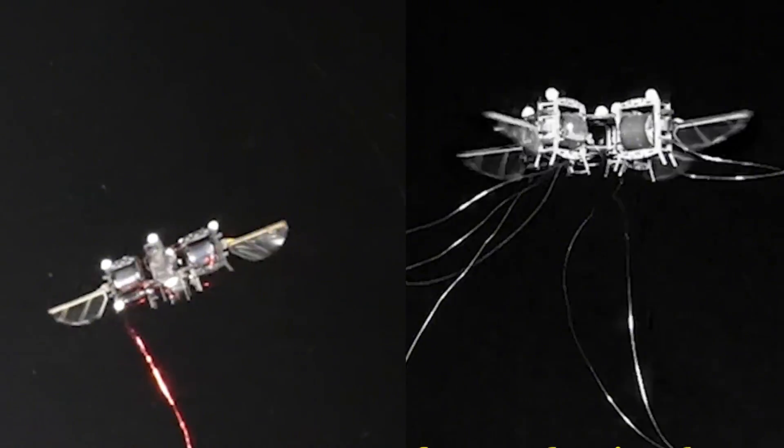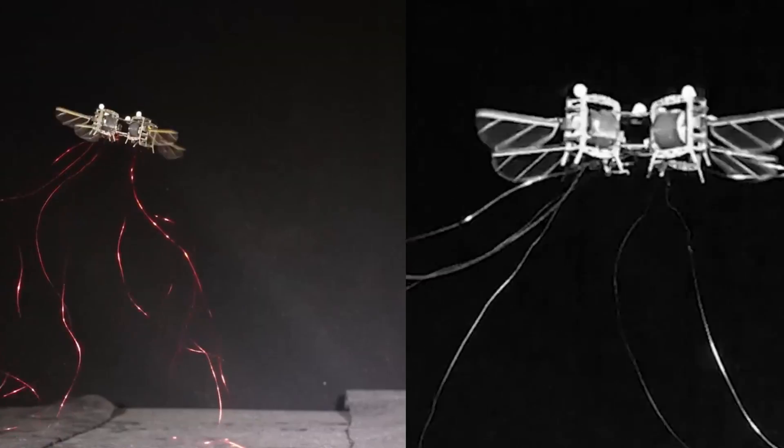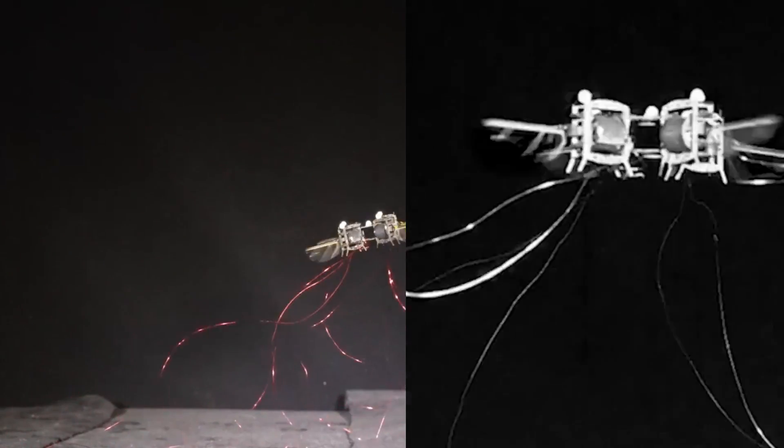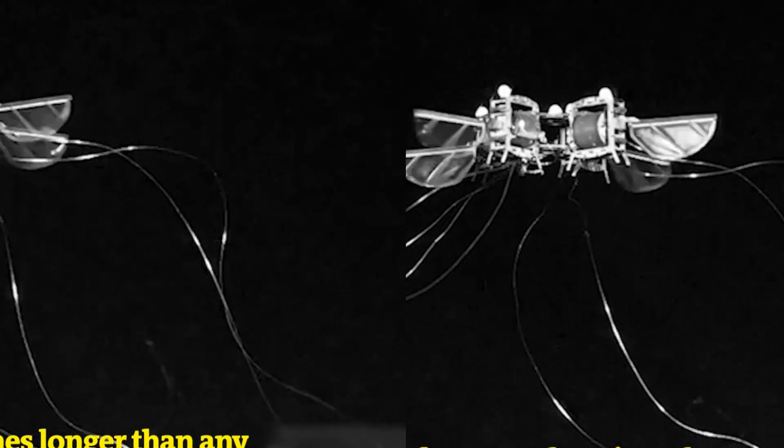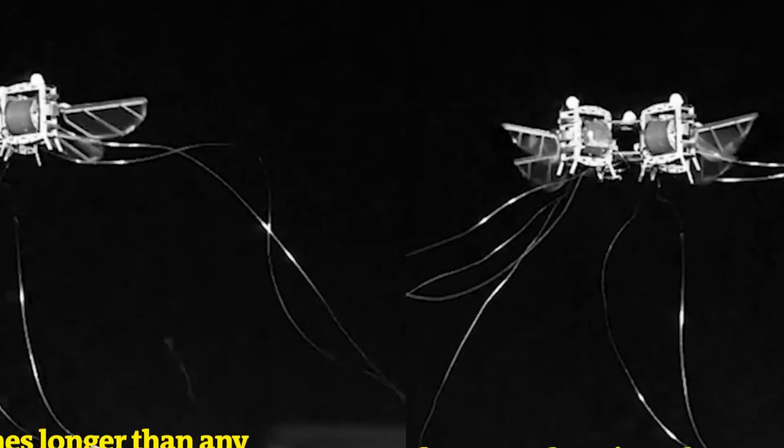As of now, this tiny robot is still tethered to an external power source, meaning you can't send it to spy on your lover yet. But the team working on it is optimistic about future developments, aiming to miniaturize the power source and onboard electronics, which would make the robot fully autonomous.